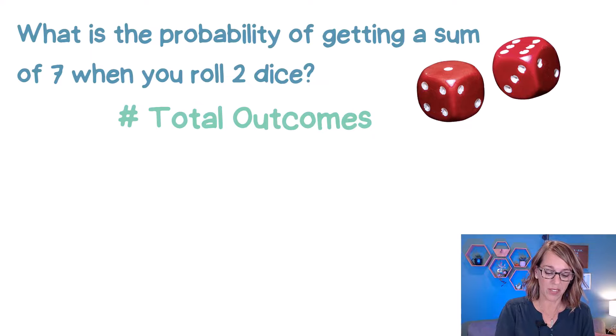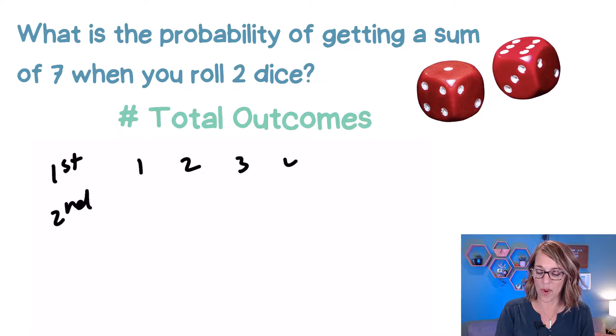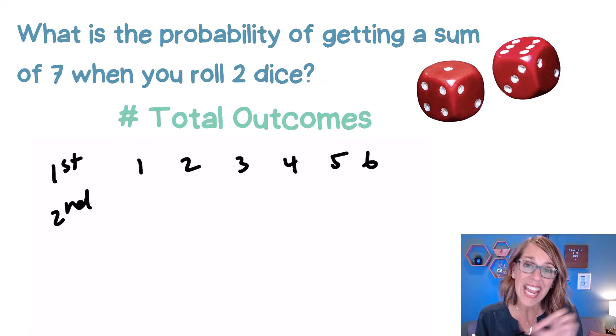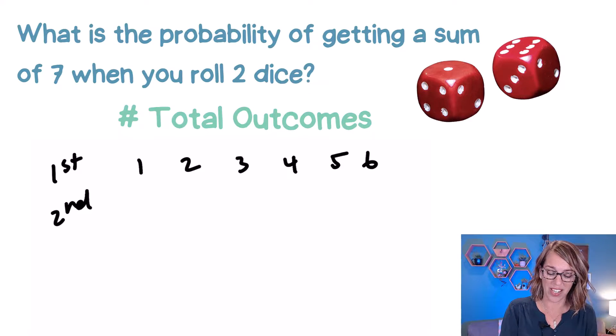Now there's a couple different ways that you can do this. One is to think about your first dice and your second, and I know that the first one can be anything from one to six, and then I can pair any of those numbers one through six with one through six on the second dice, and so on.